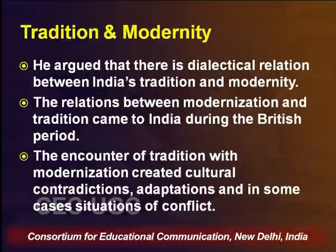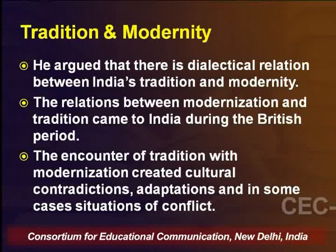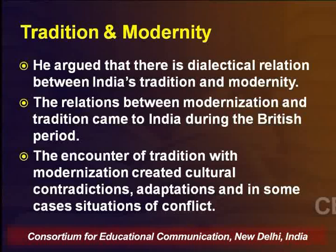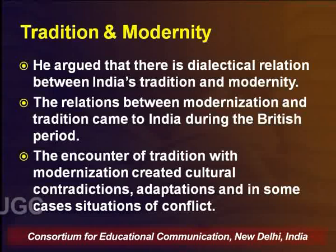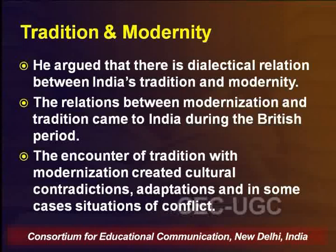When we look into the concept of tradition, it is very important to understand how D.P. Mukherjee arrives at an understanding of the relation between tradition and modernity. He argued that there is a dialectical relation between India's tradition and modernity. The relation between modernization and traditions came to India during the British period. The encounter of tradition with modernization created cultural contradictions, adaptation, and in some cases situations of conflict. Cultural contradiction arose when many practices considered problematic were questioned — people challenging child marriage, questioning the way Indians treated widows, and so on.